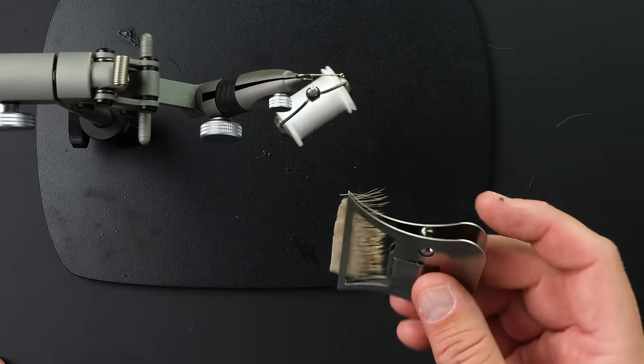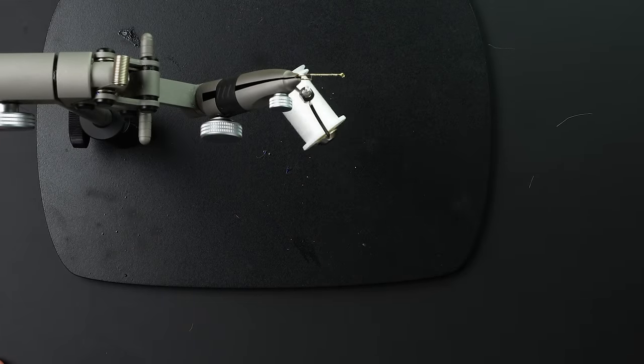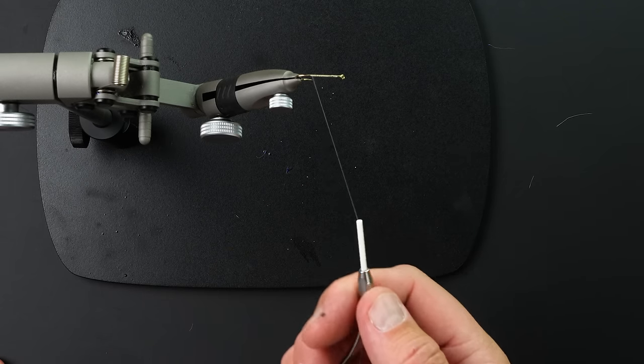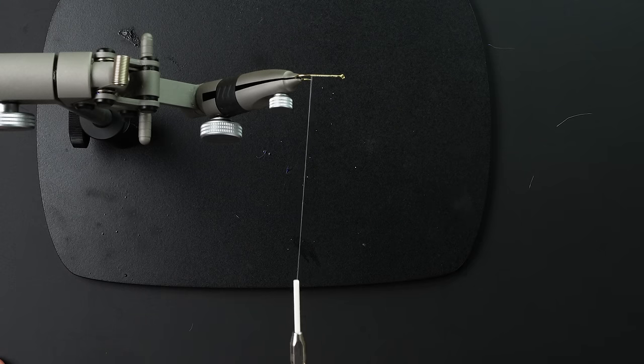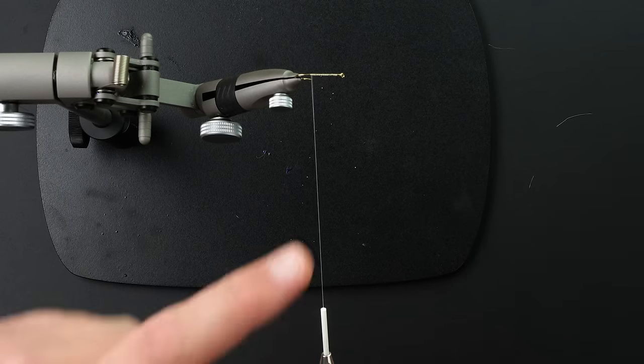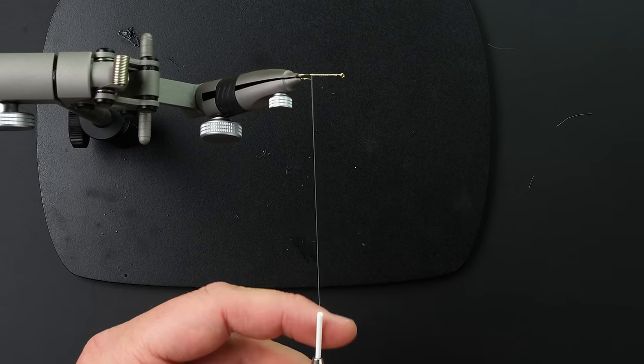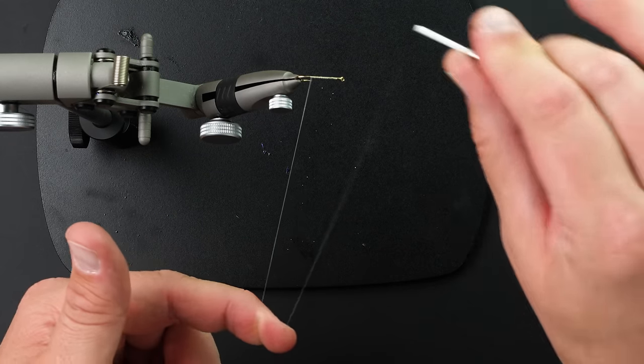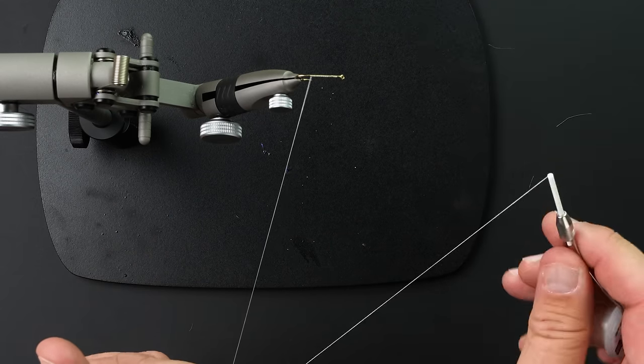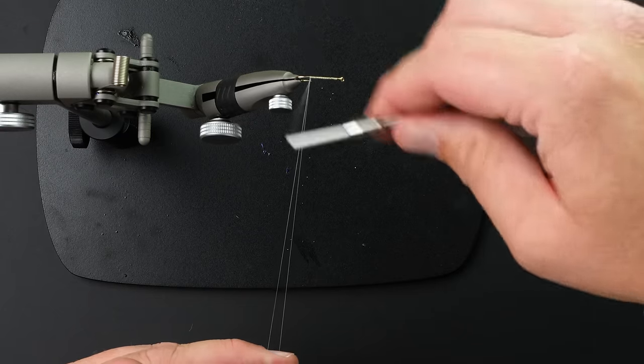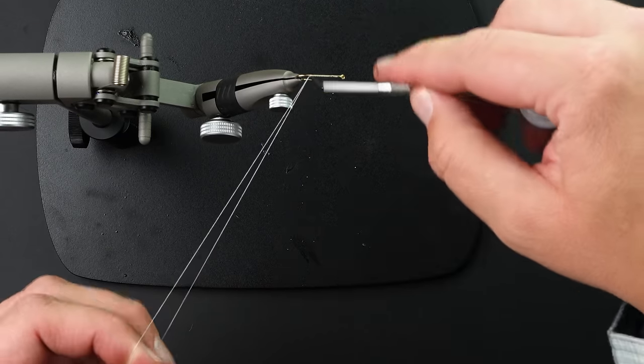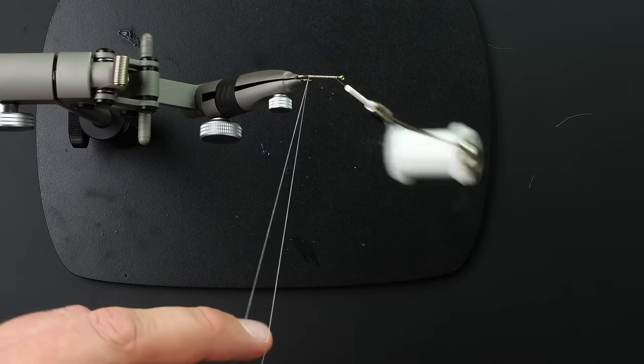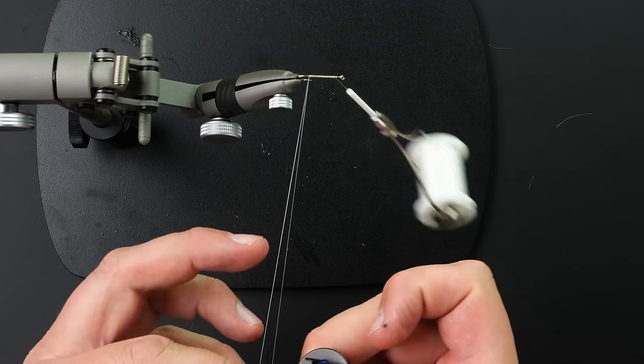We are now going to take this deer hair and we're going to put it into a dubbing loop. This is 50 denier GSP thread, nano silk, GSP, all the same thing. It's a gel spun polyethylene thread that's pretty much indestructible. So what I'm going to do is I'm going to just build a dubbing loop. I like to use 50 denier because I want it to be thin enough to really spin up on the deer hair. And I'll just close off the loop by crossing over behind it. And then I'm just going to wrap that thread forward.